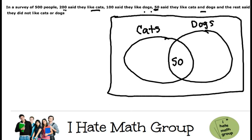Now, 200 people say that they like cats. I cannot put 200 here because I'm going to be double counting. If I put 200 here, look, my whole thing is going to be 250. So I don't put 200.